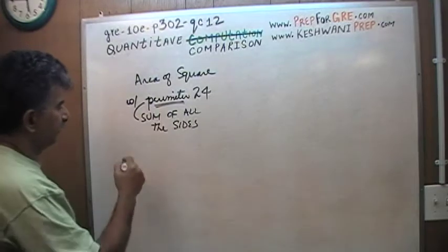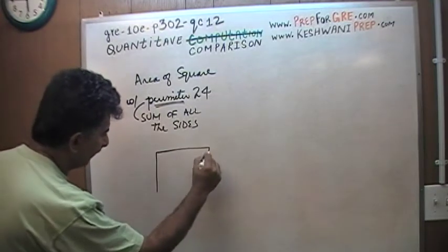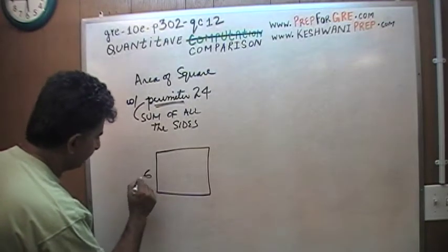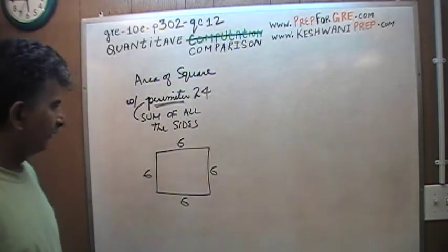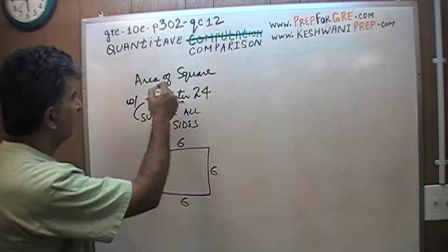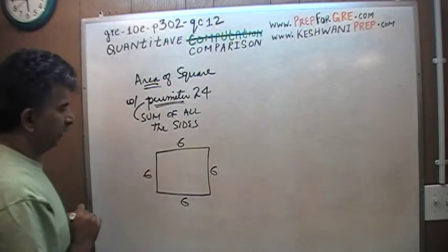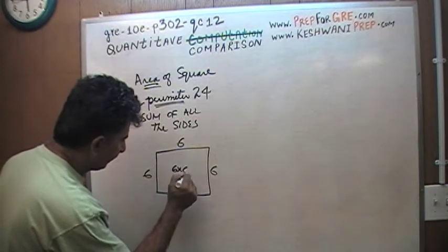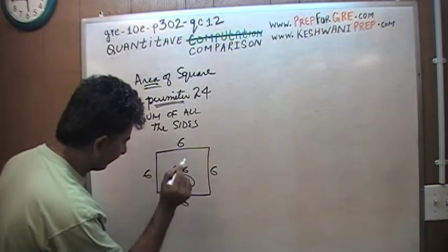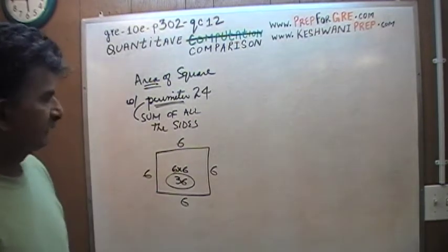So here, the perimeter is 24, so I'm dealing with a square with 4 sides, and each side better be 6. Because 6 times 4 is 24. Therefore, the area of this guy is 6 times 6, which is 36.